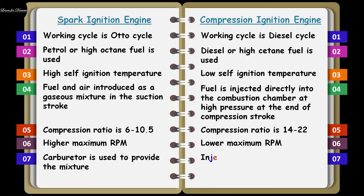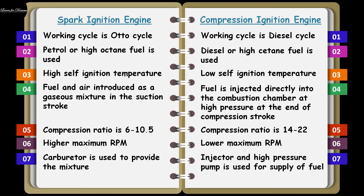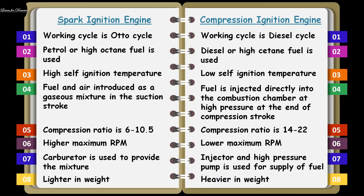Next is the carburetor. The carburetor is used to produce the air-fuel mixture in case of spark ignition engine, and a spark plug is used to ignite the fuel. In case of CI engine, an injector is used to inject the diesel fuel directly into the combustion chamber where the fuel burns in compressed air. Finally, the weight — the weight is less in case of SI engine and the weight is more in case of CI engine.